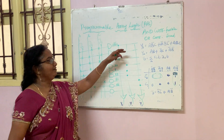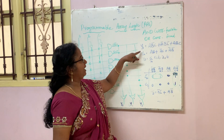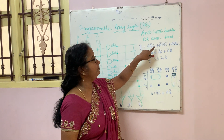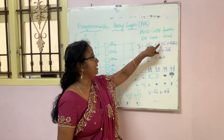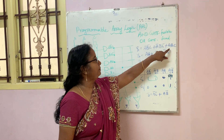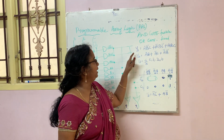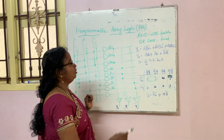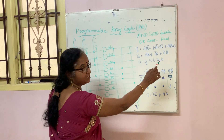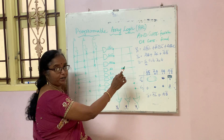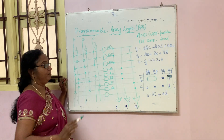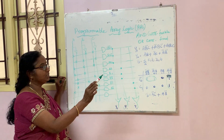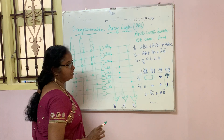Here we are having three equations. Y1 is equal to AB bar C plus A bar B C bar. We also have Y2 and Y3. All these equations are in sum of products, that is SOP form. So we are going to draw the logic circuit for these three equations.